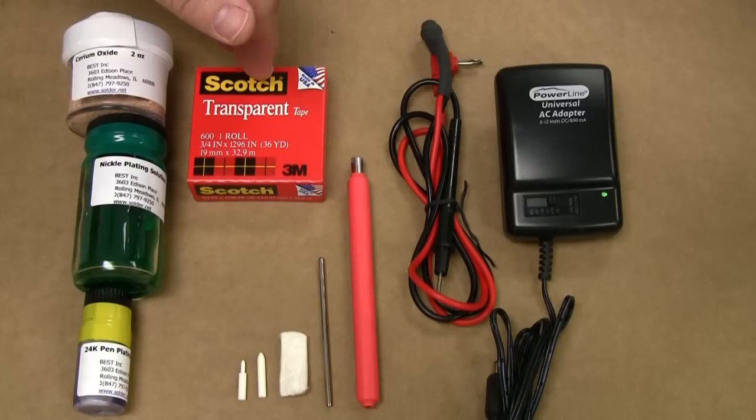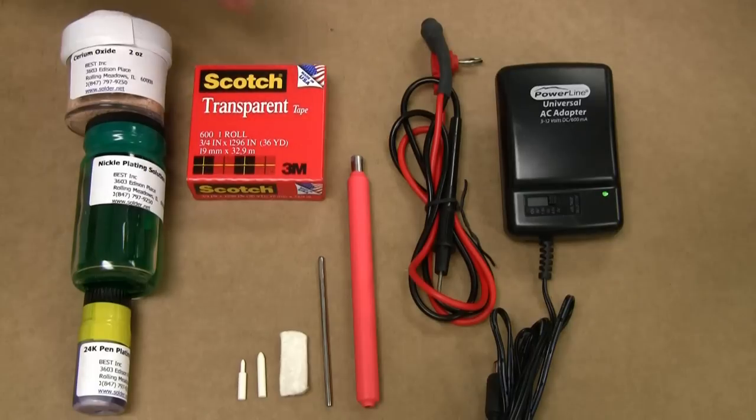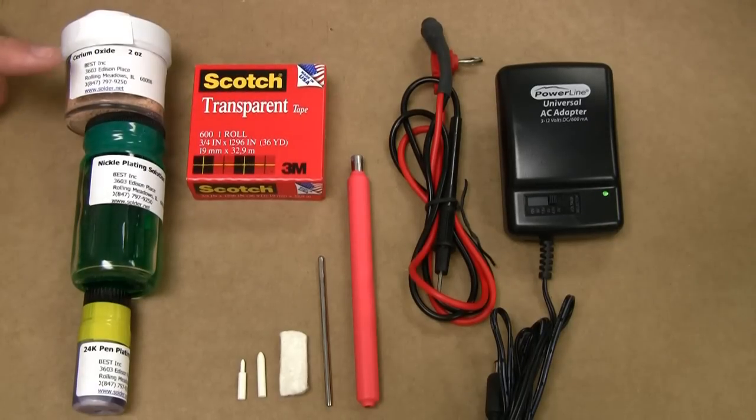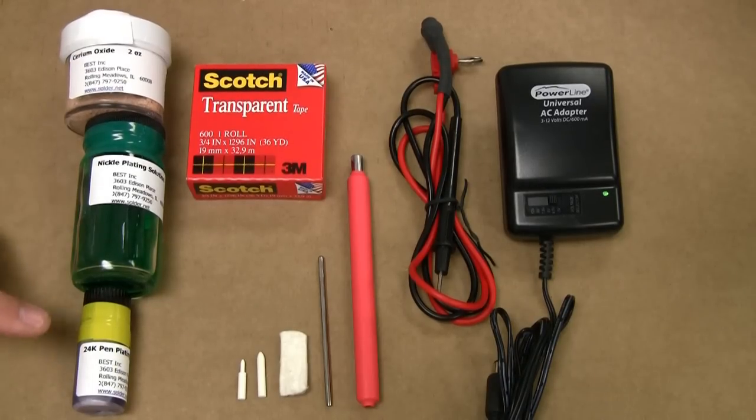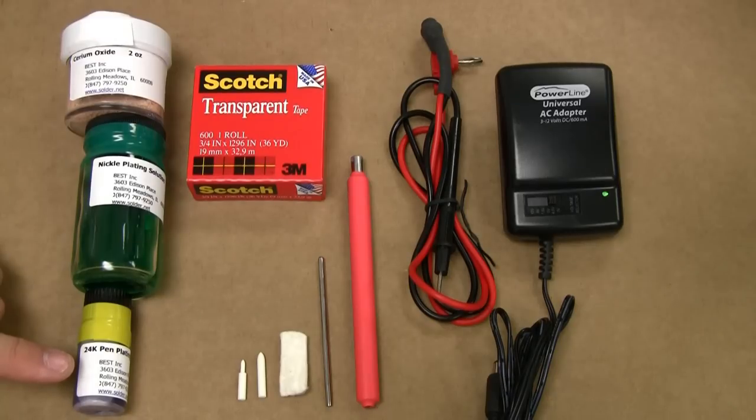You got Scotch transparent tape 600 in accordance with TM650 of the IPC standards. You have a two ounce container of ceramic oxide, two ounces of nickel plating, and you got 24 karat gold down here.